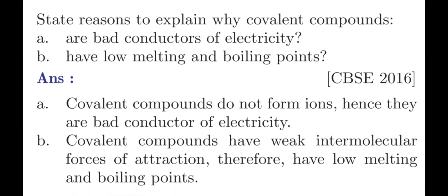Question number 3. State reasons to explain why covalent compounds: A. Are bad conductors of electricity. B. Have low melting and boiling points. The answer is: covalent compounds do not form ions, hence they are bad conductors of electricity. Covalent compounds have weak intermolecular forces of attraction, therefore they have low melting and boiling points.